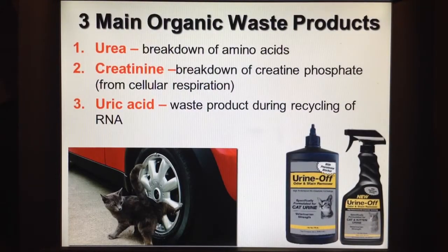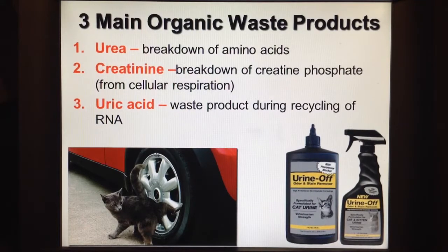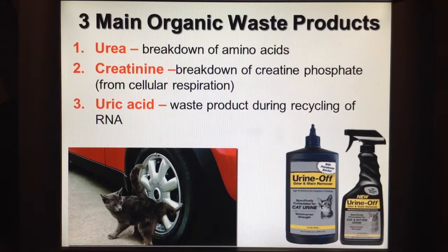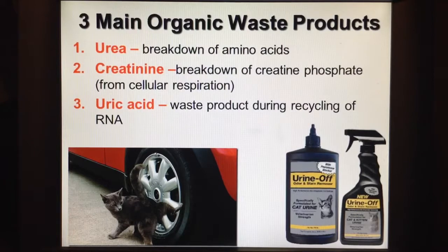These are some of the organic waste products. Urea is obviously found in urine; it comes from the breakdown of amino acids, which are the building blocks of protein. Some people refer to finding protein in urine, which usually means broken-down proteins in the form of amino acids. However, large proteins like albumin should not be in the urine, as that would signify significant kidney damage.